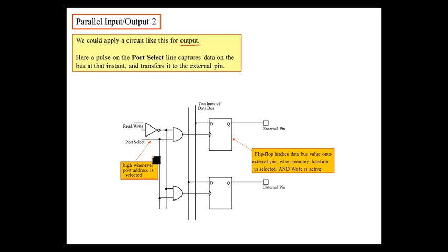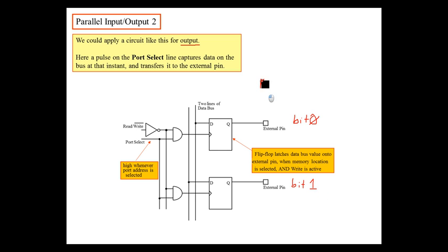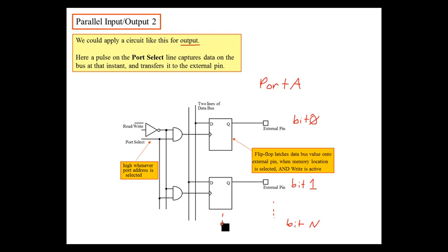If you can see here, this is an example schematic of what the output port looks like — this is just two bits of it. We could say this is bit zero and this could be bit one. We could call this port A, for example, on a microchip processor. In general, you could have lots of bits down here — bit zero through bit N — so this thing would continue to go on.